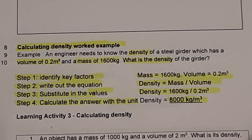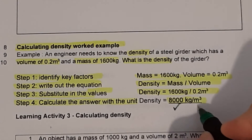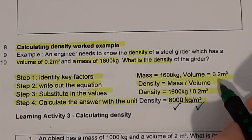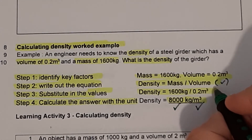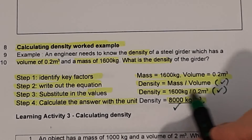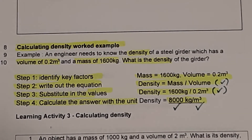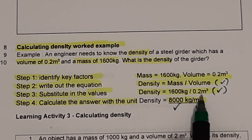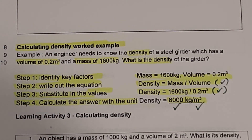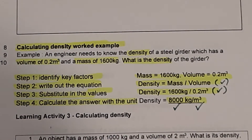You could potentially get up to four marks for a calculation question. Now we're going to have a practice question. The object has a mass of 1,000 kilograms and a volume of 2 metres cubed. What is its density in kilograms per metres cubed? Step one: identify the key factors.